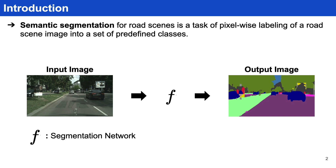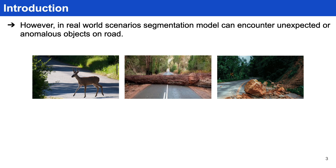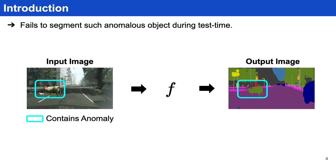Semantic segmentation for road scenes is a task of pixel-wise labeling of a road scene into a predefined set of classes. However, when we deploy such models in real-world scenarios, there could be a possibility of encountering anomalous objects on the road. So these models tend to fail during test time.